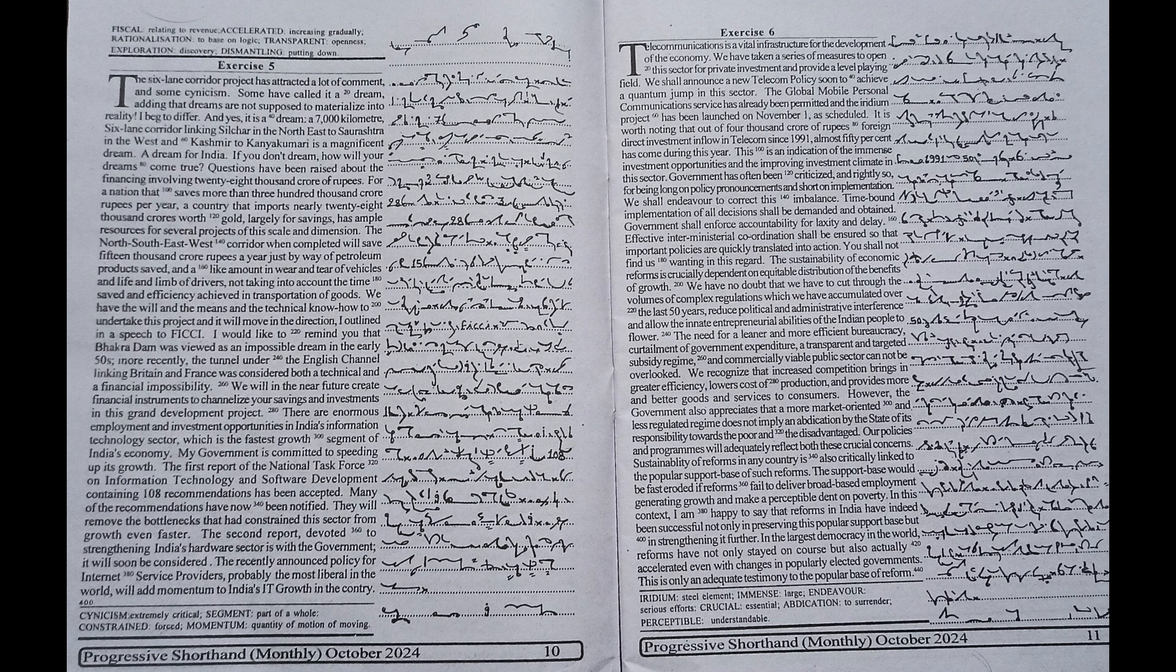The north-south-east-west corridor, when completed, will save 15,000 crore rupees a year just by way of petroleum products saved and a like amount in wear and tear of vehicles and life and limb of drivers, not taking into account the time saved and efficiency achieved in transportation of goods.